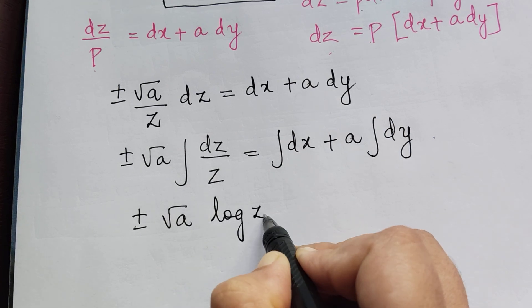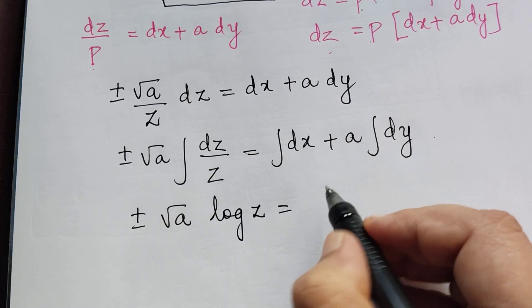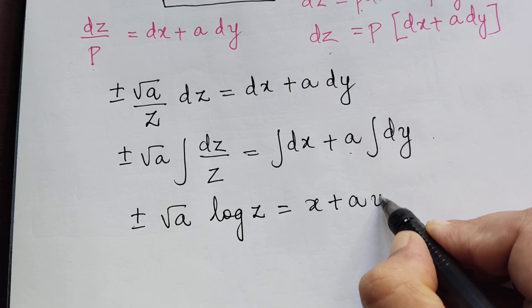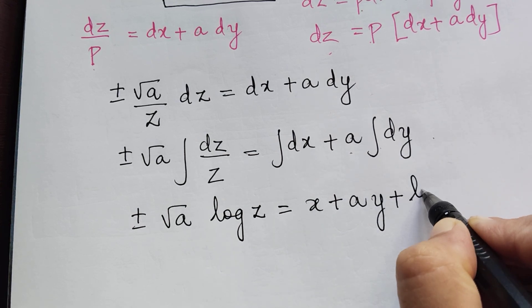So ± √A log Z = x + Ay + B, where B is a constant of integration.